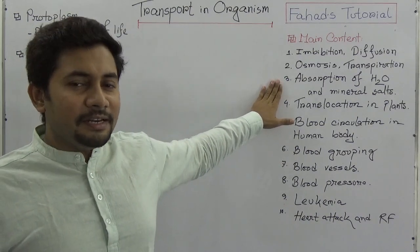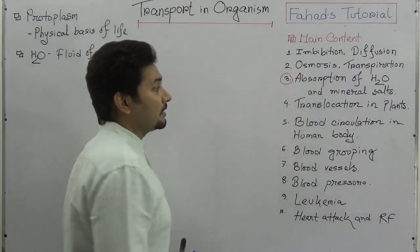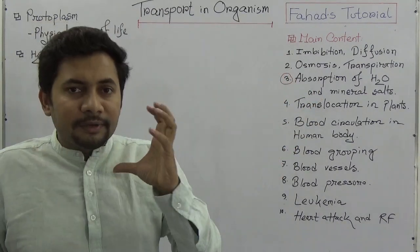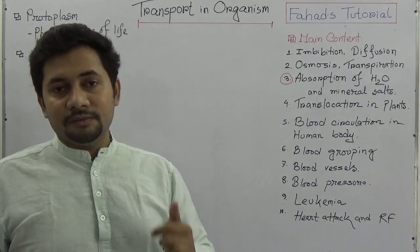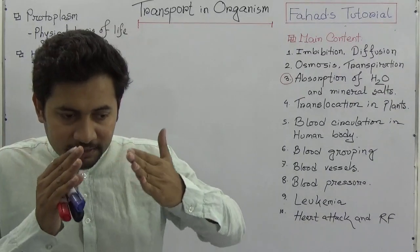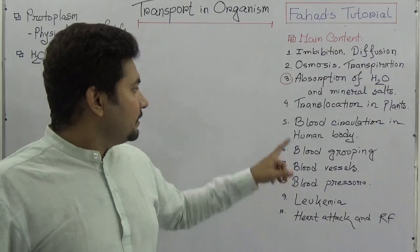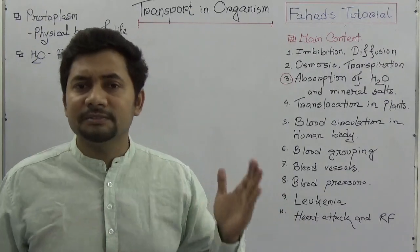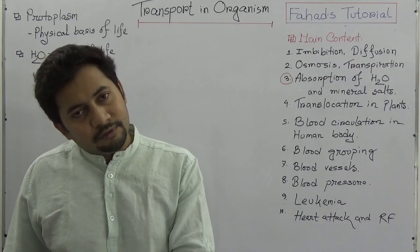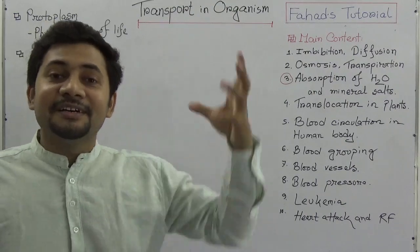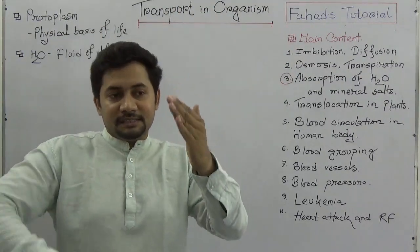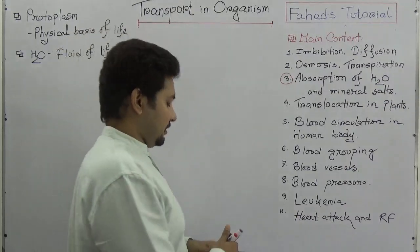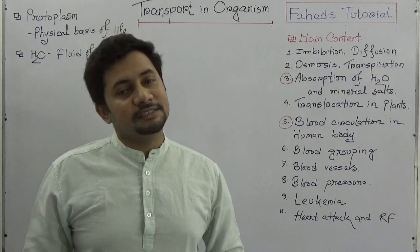A very important topic — number three — is the absorption of water and mineral salts in plants. When we study imbibition, diffusion, and osmosis, we understand how these processes work. Number four is a big part: translocation in plants — how xylem tissues and phloem tissues work, how water moves from the root up to the leaf, and how food particles move from the leaf to other parts of the plant.